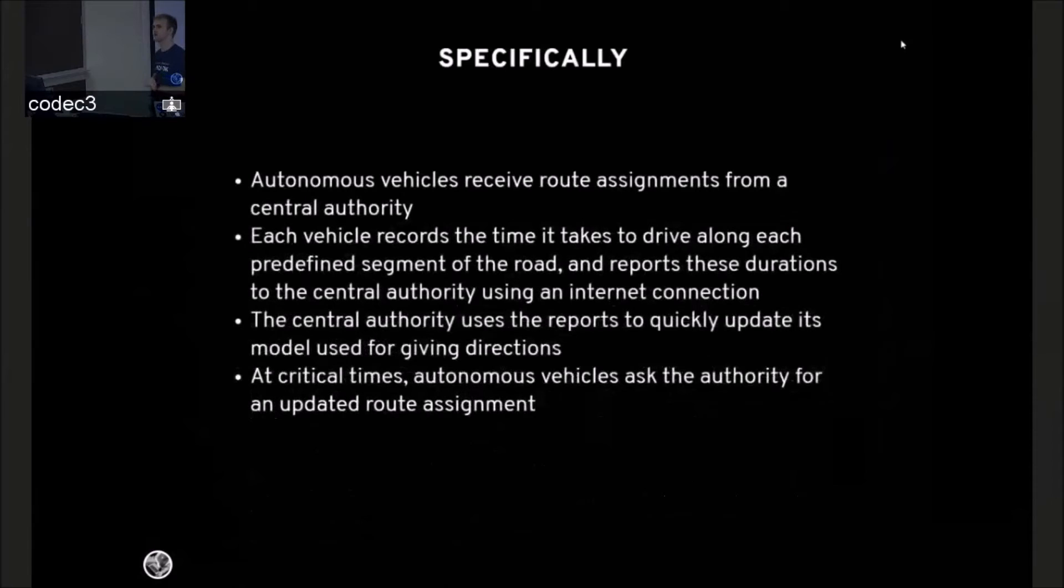Specifically, I'm talking about autonomous vehicles that receive route assignments from a central authority, like Google Maps. Each vehicle records the time it takes to drive along predefined segments of the road and reports those back to the central authority. The central authority takes those reports and updates its internal models. And at critical moments, the autonomous cars ask for new updated routes from the central service.